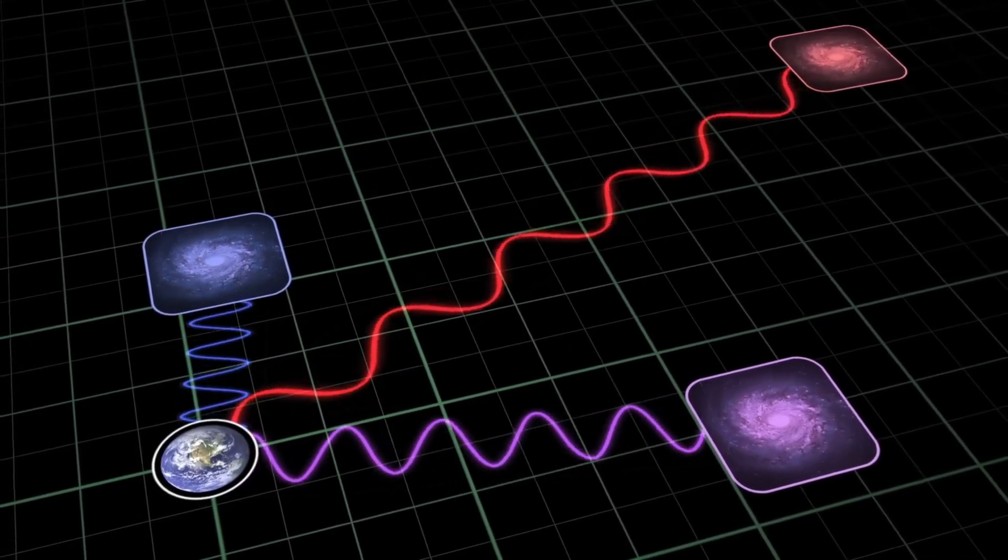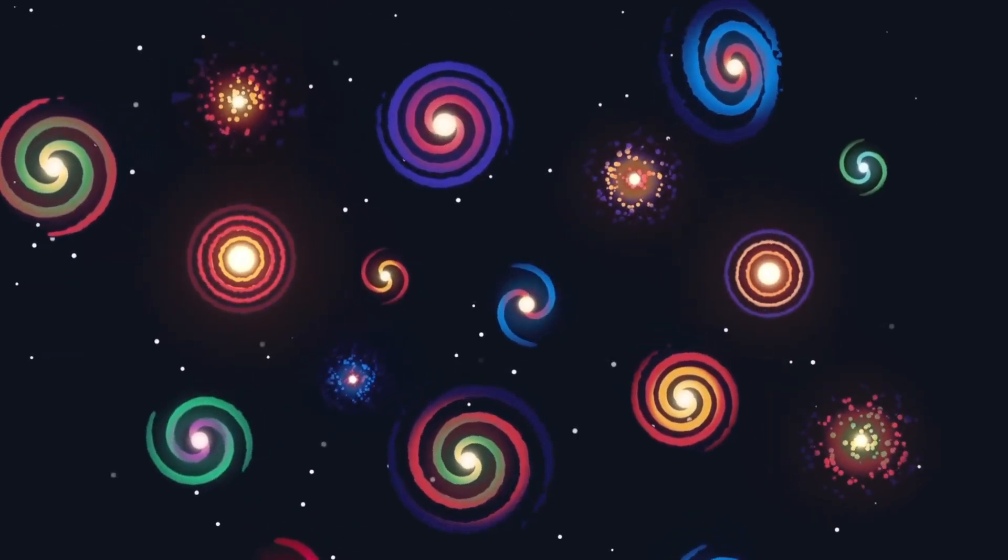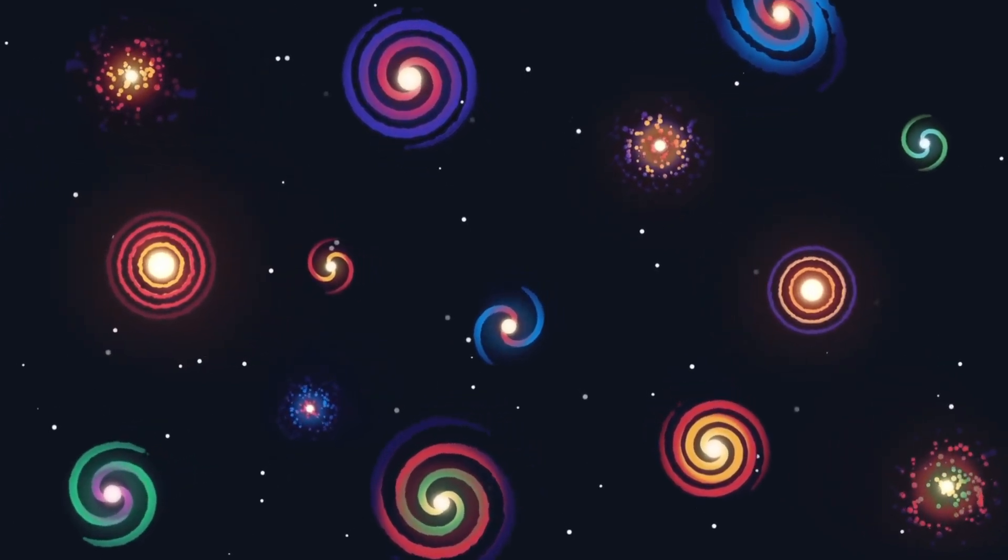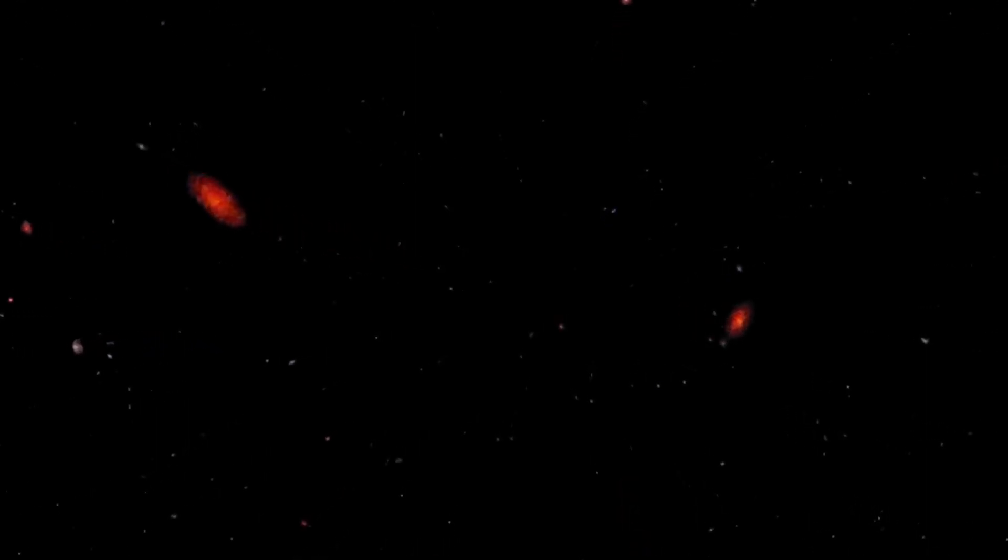That last idea connects with a concept once thought purely theoretical, the multiverse. If inflation produced countless bubble universes, each expanding with slightly different properties, collisions or overlaps between them could have left subtle traces, distortions in temperature, polarization, or galaxy distribution. Some of Webb's deepest fields show circular patterns and faint discontinuities that match what such interactions might look like. They are not proof, but they are hints, glimpses of a reality larger than the one we can directly observe.